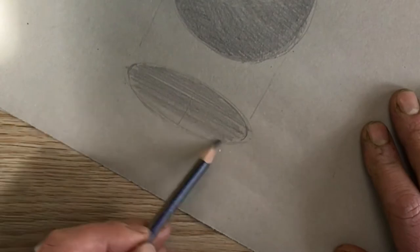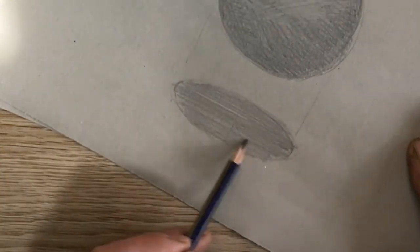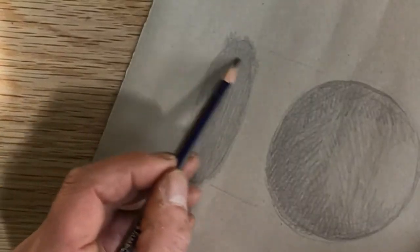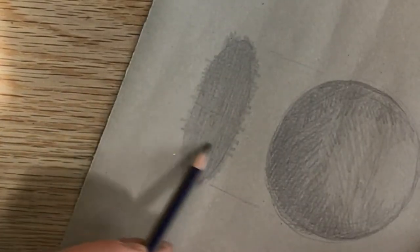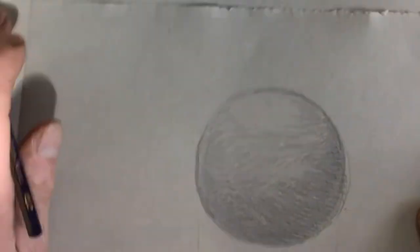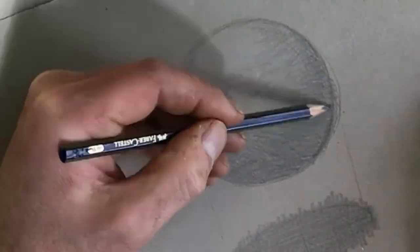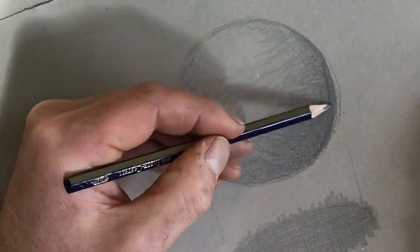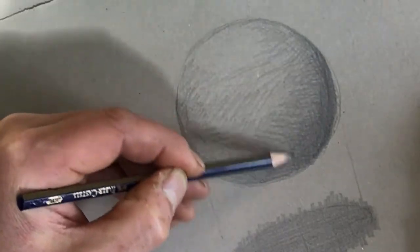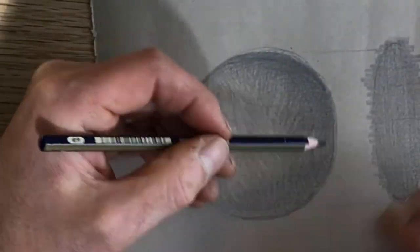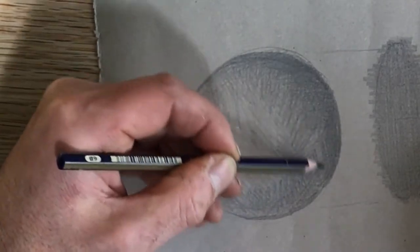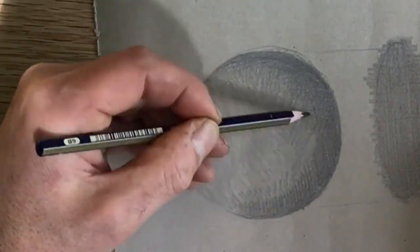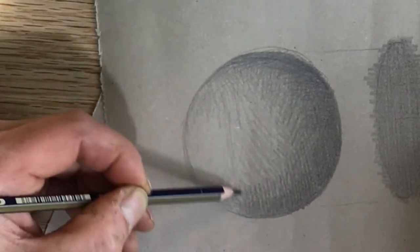So the cast shadow underneath, our ball is floating. So unlike most tutorials, our shadow is not going to be making contact with the ball. It's just that ellipse underneath. Okay, so I've adjusted my grip, pressing just a little heavier, building up the darkest layer of tone and just neaten up that nice edge. Keep it nice and clean.